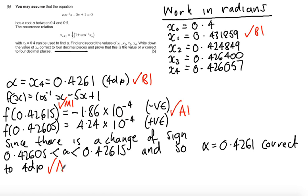Finally, there is an answer mark for the statement at the end explaining since there is a change of sign, alpha lies between the bounds, and so alpha equals 0.4261 correct to four decimal places.